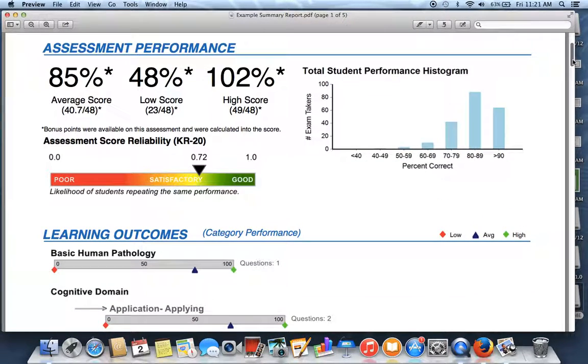Up here in big numbers, we have our average score, our low score, and our high score, as well as our student performance histogram, which indicates how many students got which percentage correct. And right here we have our assessment score reliability, or our KR20 metric.